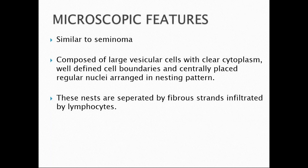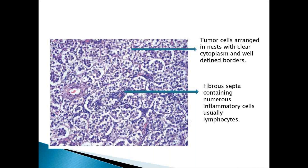Coming to the microscopic features, dysgerminoma is similar to that of seminoma — all microscopic features are similar and the cells also appear like seminoma cells. The tumor is composed of large vesicular cells with clear cytoplasm, well-defined cell boundaries, and centrally placed regular nuclei arranged in a nesting pattern. These nests are separated by fibrous strands infiltrated by lymphocytes.